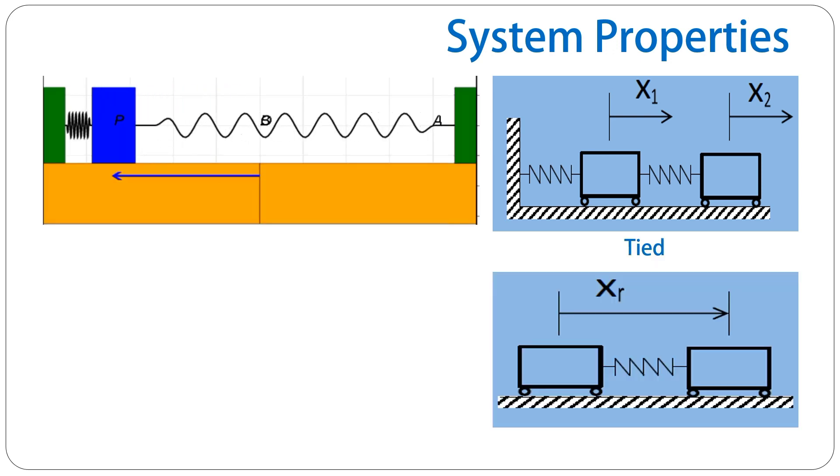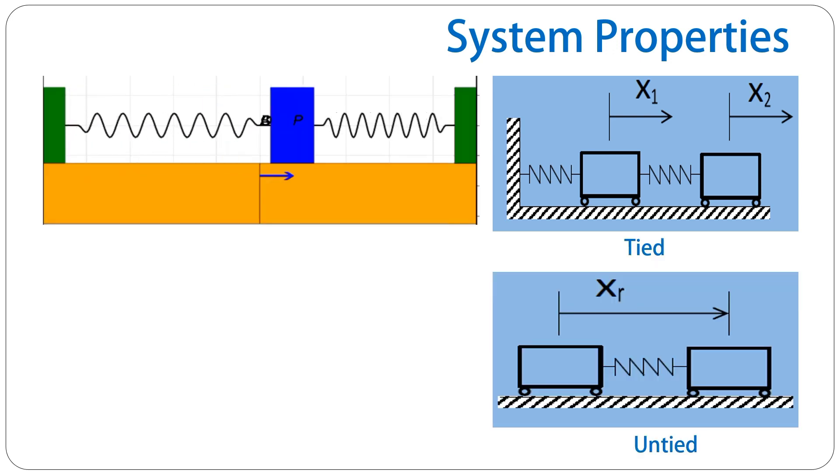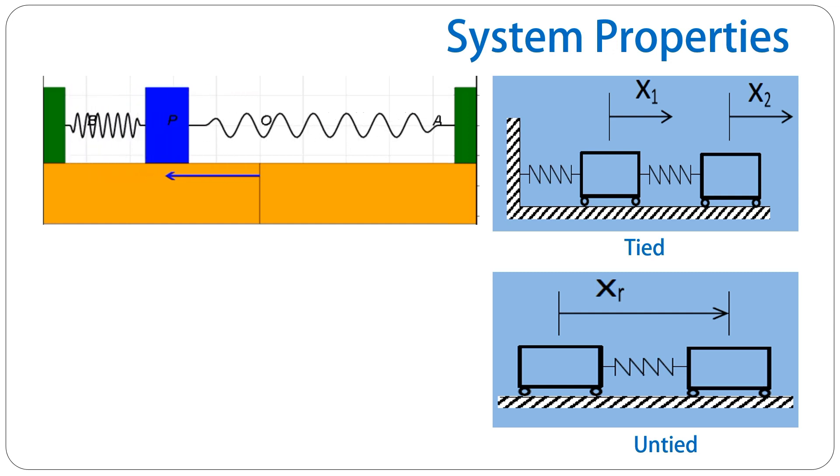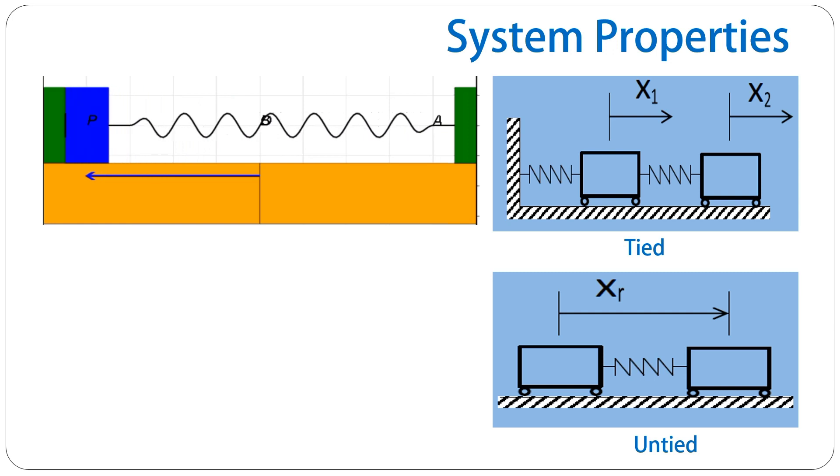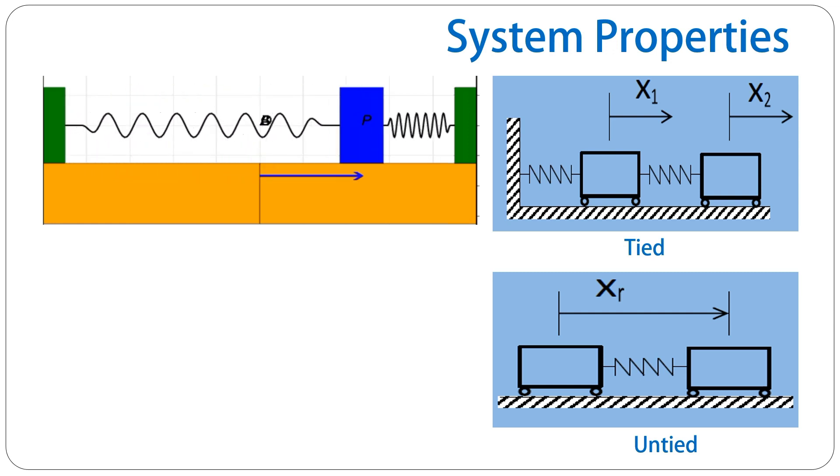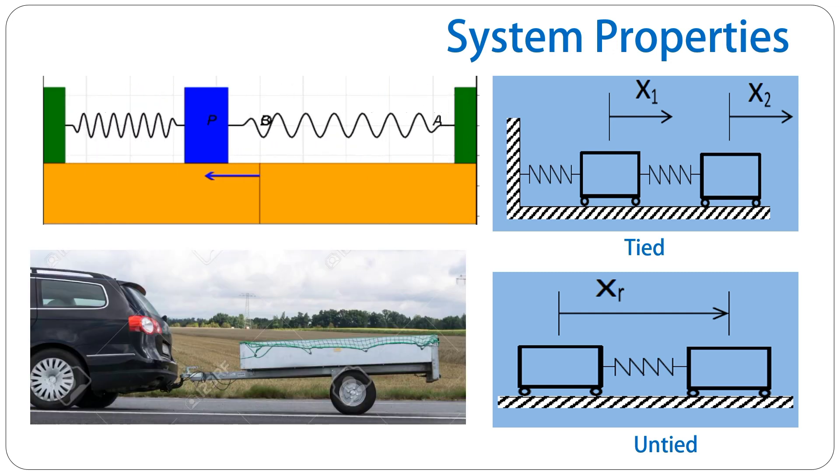And finally, we can also talk about tied or untied systems. The system that we had previously was a tied system. Again, this is also a tied system. We have now a second mass, but if we are looking at the two masses, we may also have an untied system where there is just a spring between the two masses.